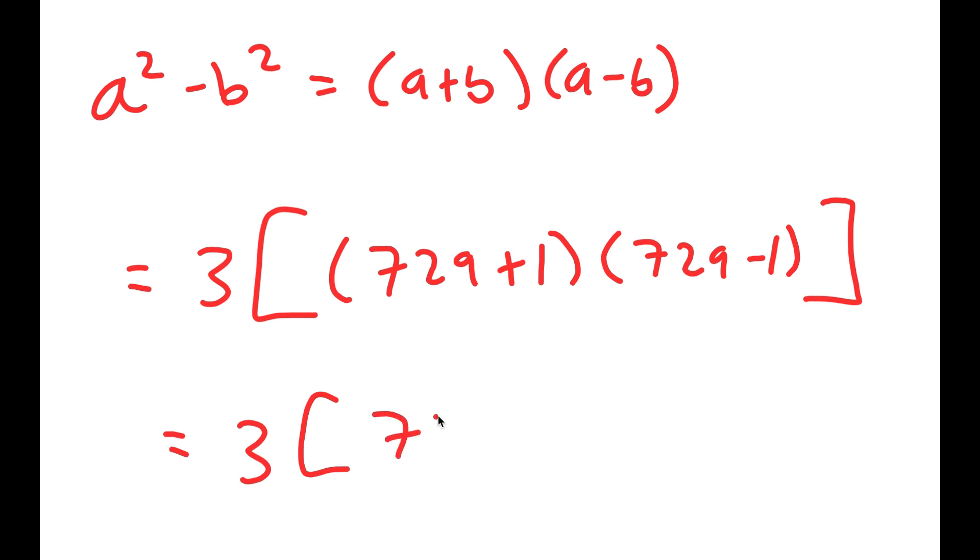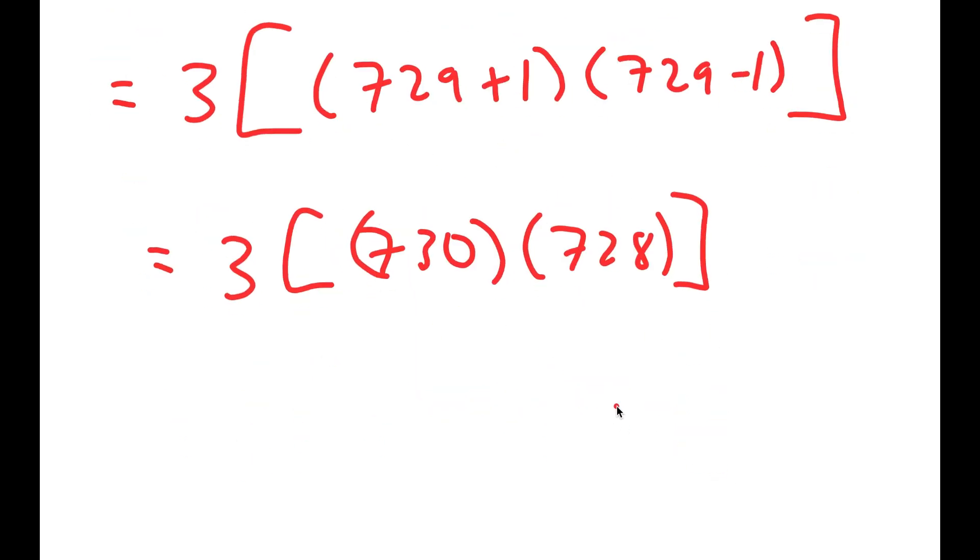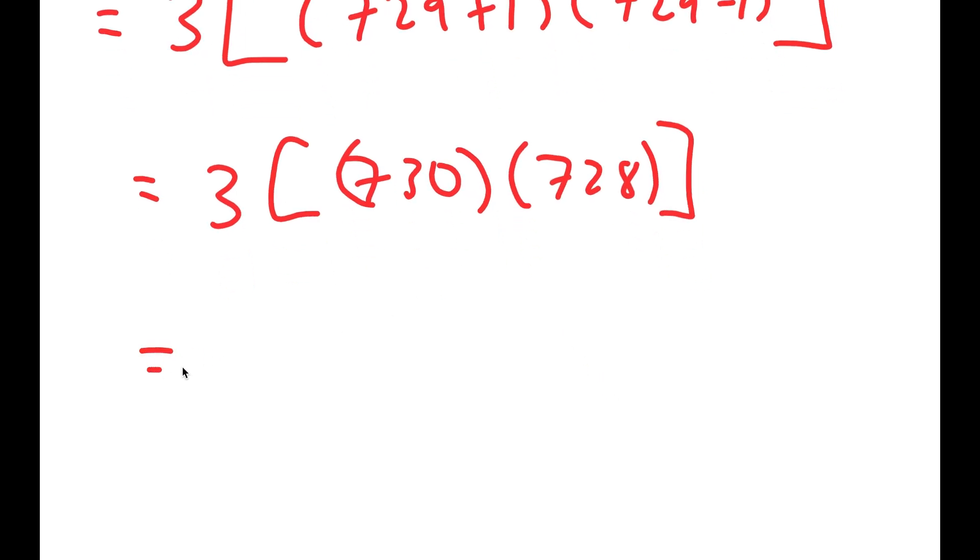This is equal to 730 times 728. So from here, I'm going to rewrite this as 700 plus 30 times 700 plus 28.